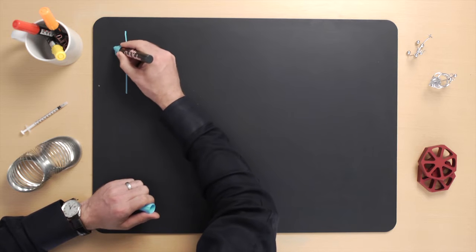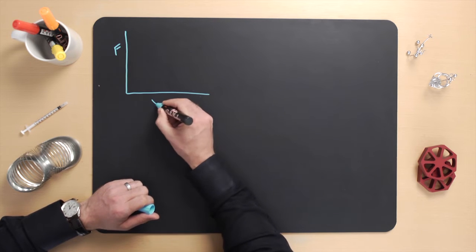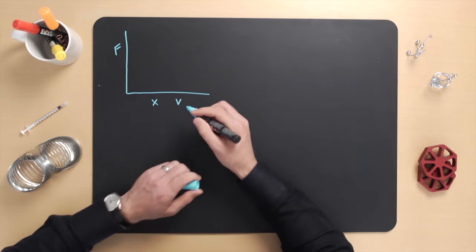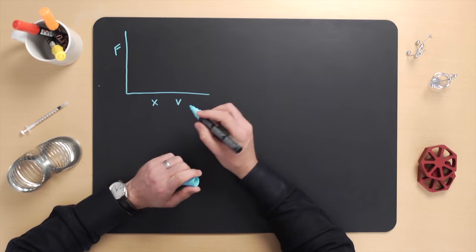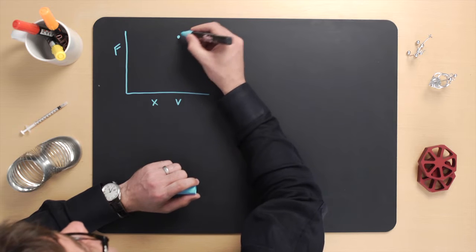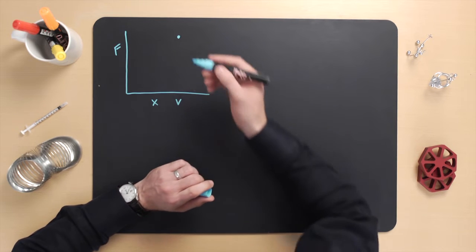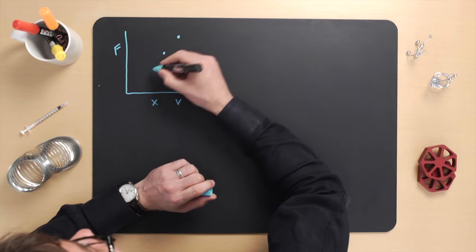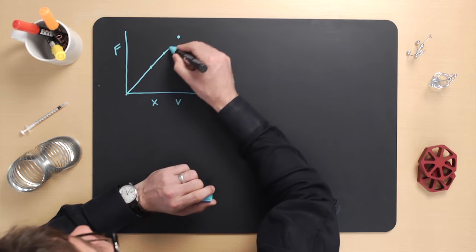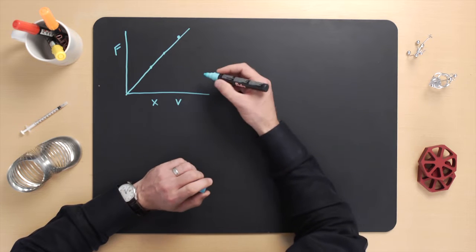On one axis we have force. On the other axis we have either position x or maybe velocity v. And the relationship between them is maybe a point like this. Now, engineered systems will typically be on some sort of line where if you decrease x, then that will decrease the force as well.